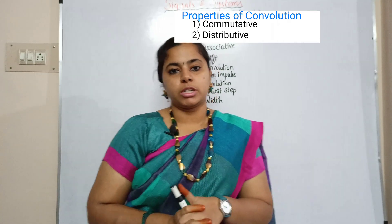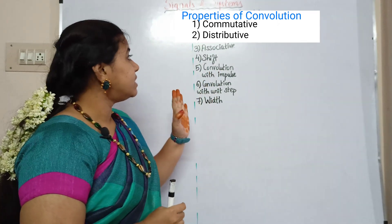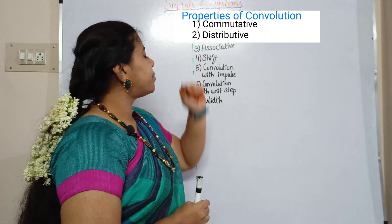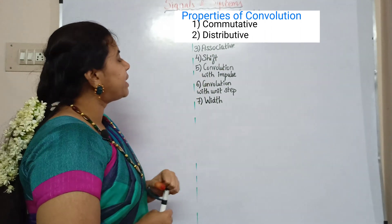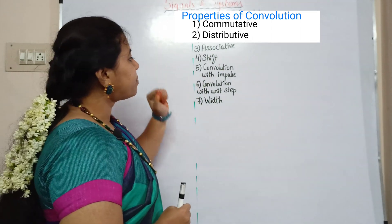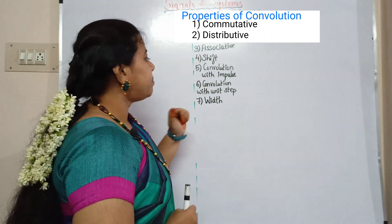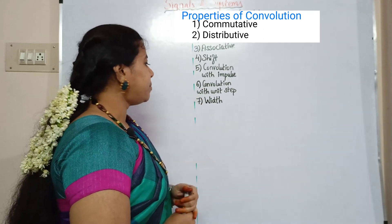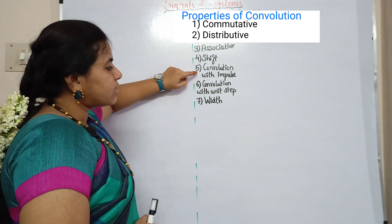Next, properties of convolution. We have discussed these properties: commutative property, distributive property, associative property, shift property, convolution with impulse, and convolution with unit step.